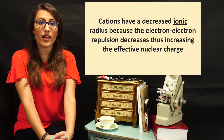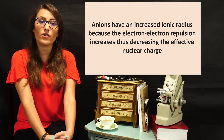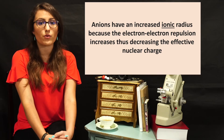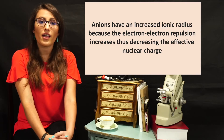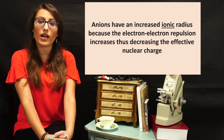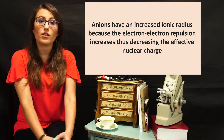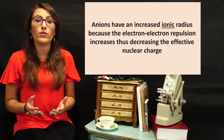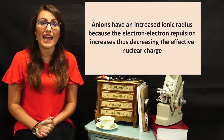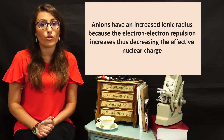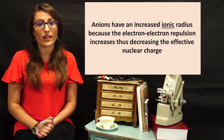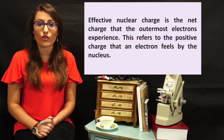In the case of anions, electrons are being added to an atom, which increases the electron-electron repulsion, and there are more electrons than protons. The protons are not able to pull the additional electrons as tightly towards the nucleus, which in turn decreases the effective nuclear charge.